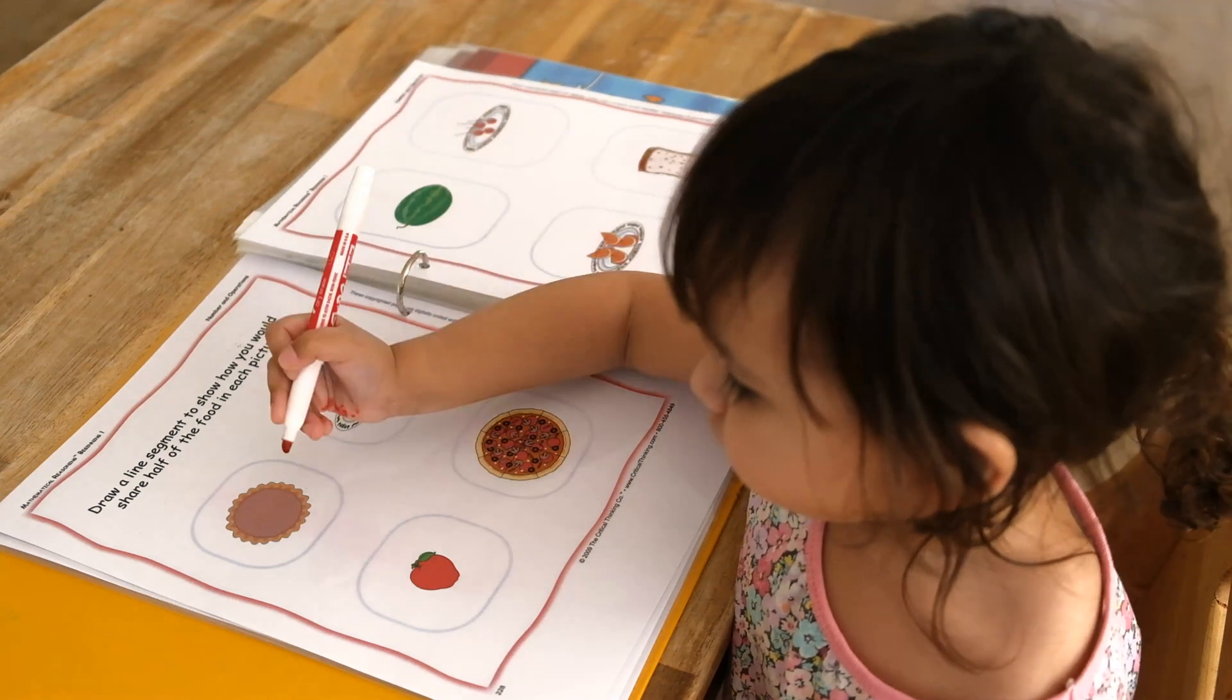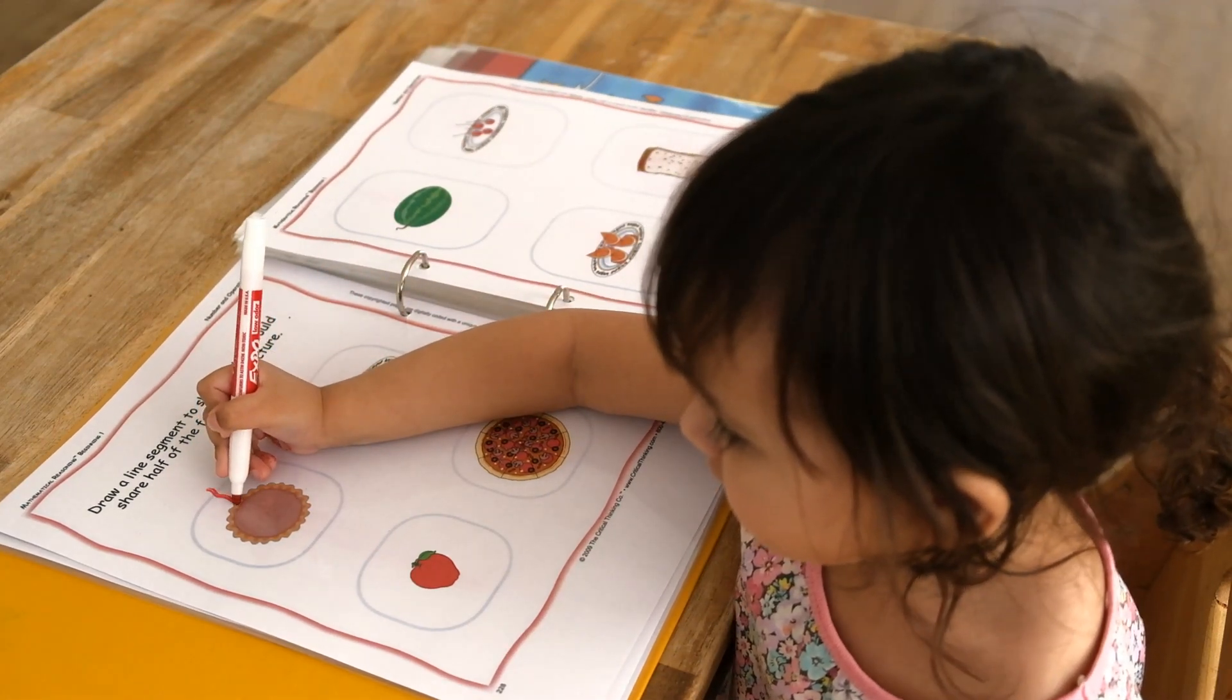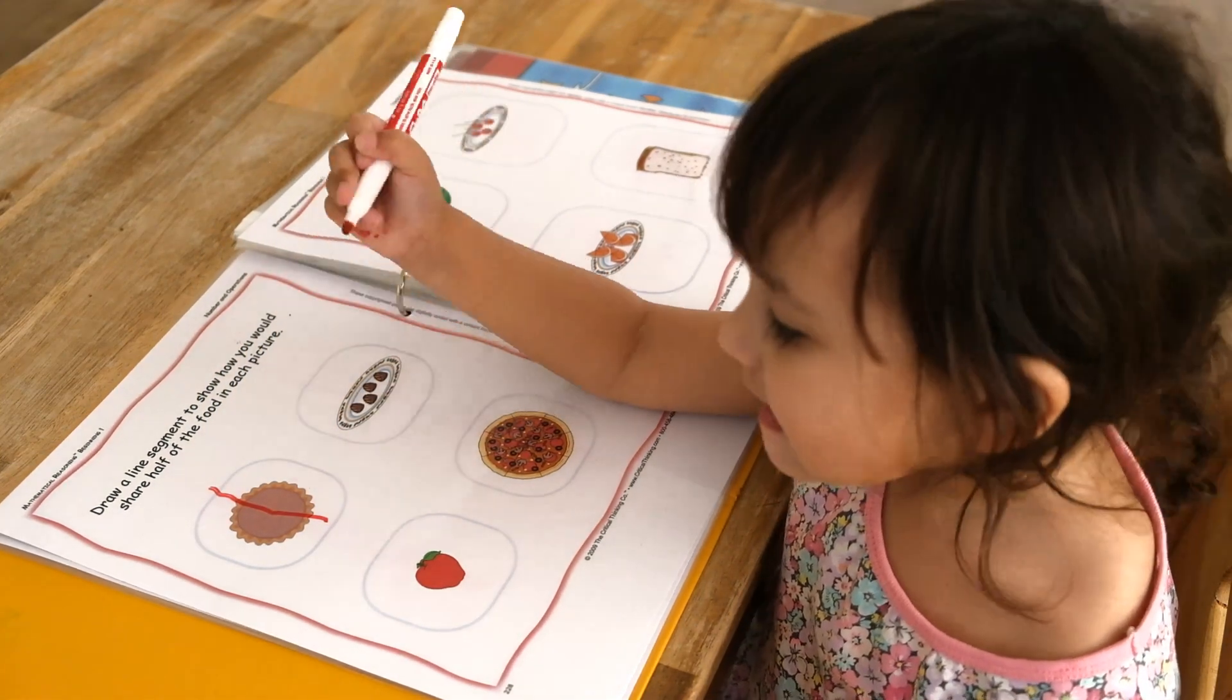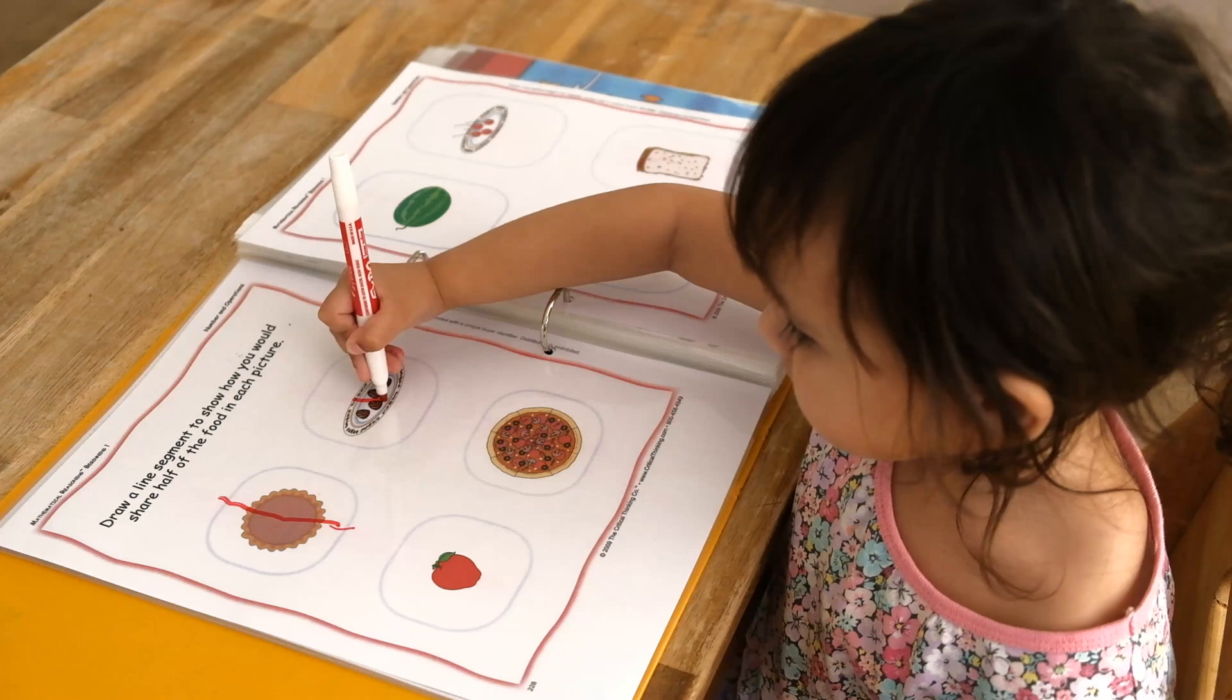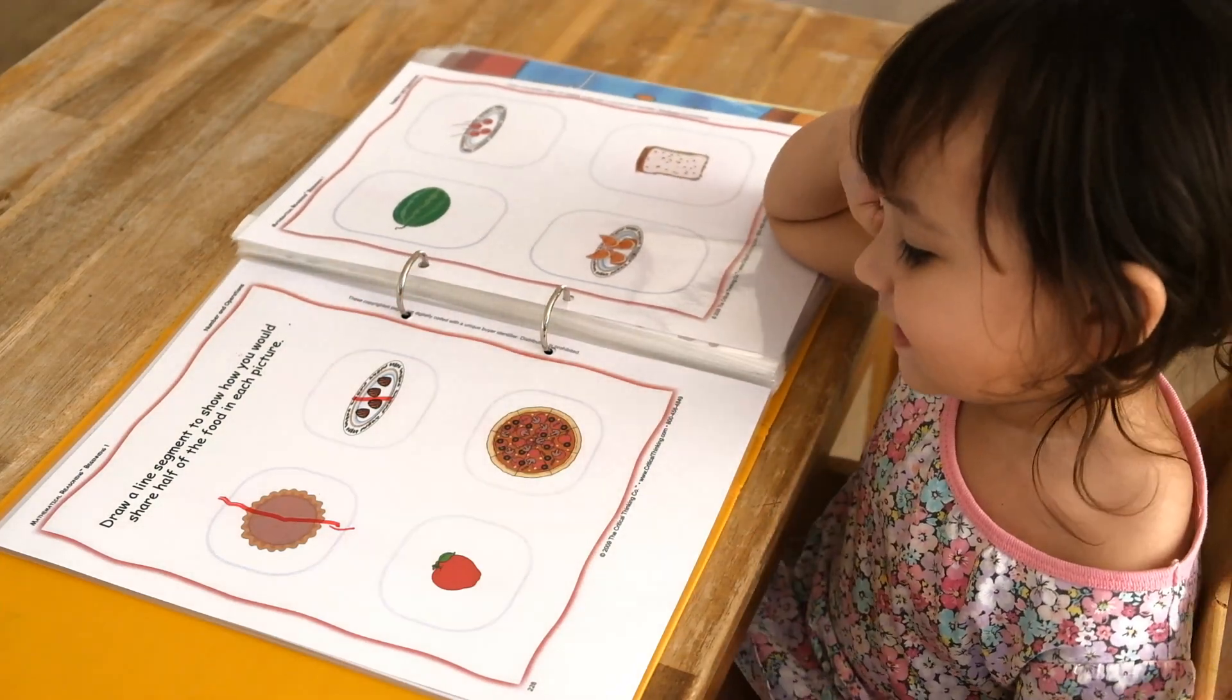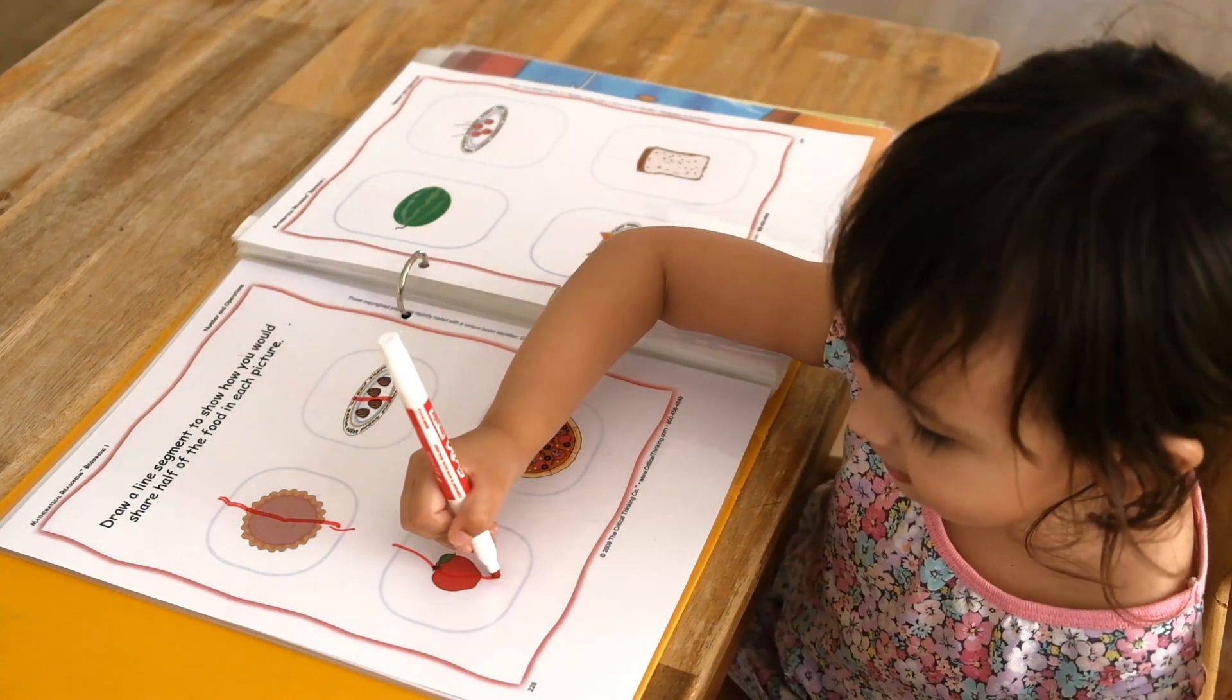Draw a line segment to show how you would share half of the foods in each picture. Try. Try. What about the next one? Yeah. What about the apple? How would you share that? Like this.